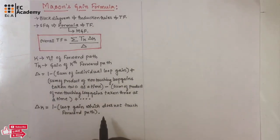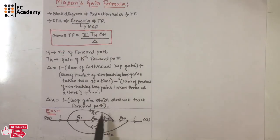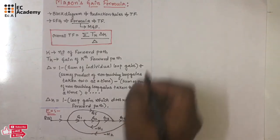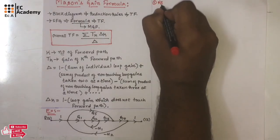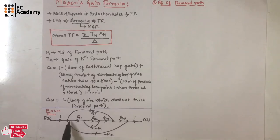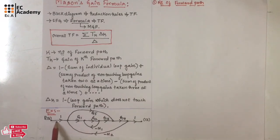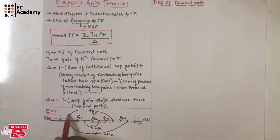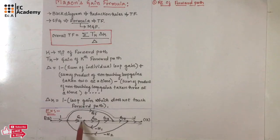All these things we will understand by considering an example. Let us consider this signal flow graph. The first step is to find the number of forward paths. A forward path means reaching from input to output without crossing any node more than once. Observing this signal flow graph, this is one forward path, and this is the second forward path.